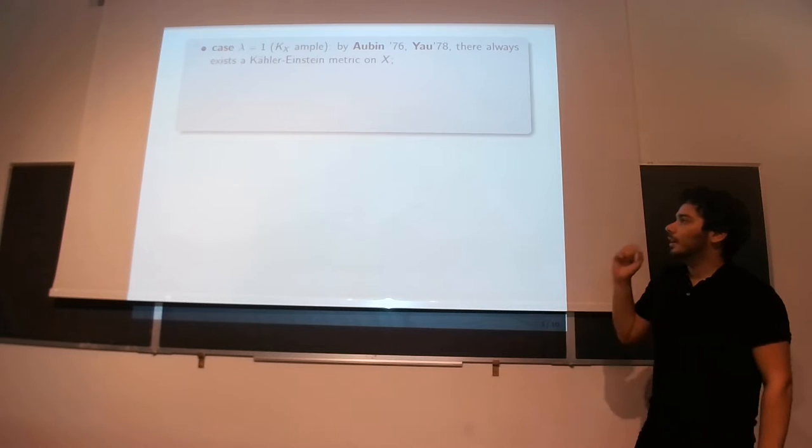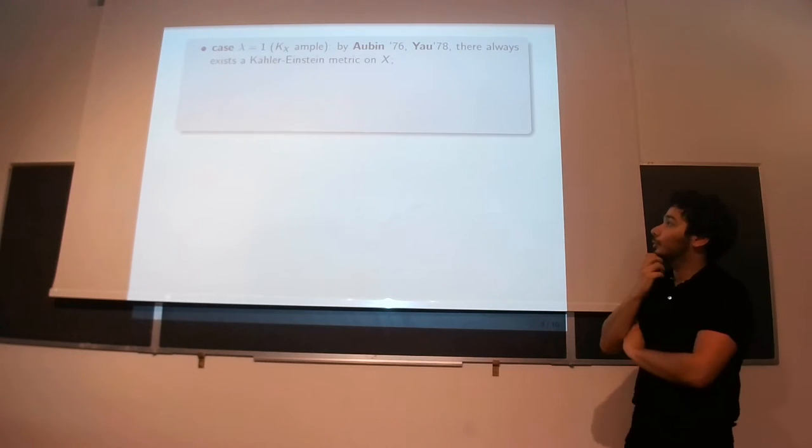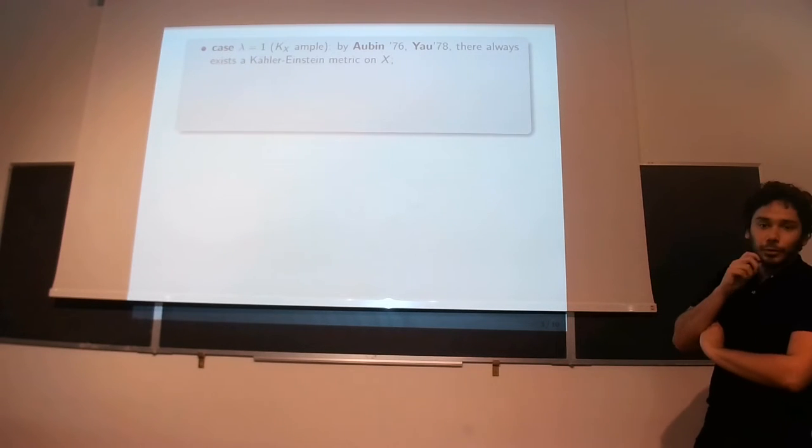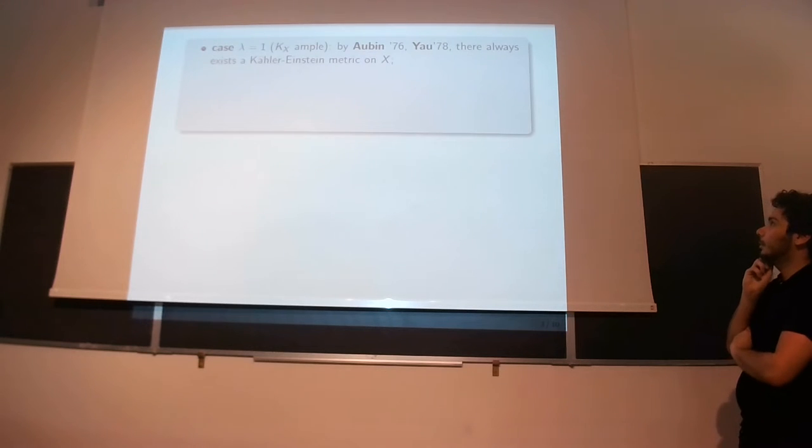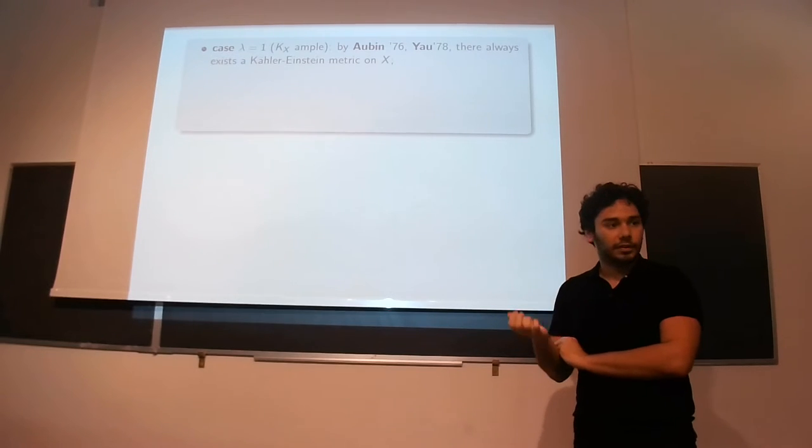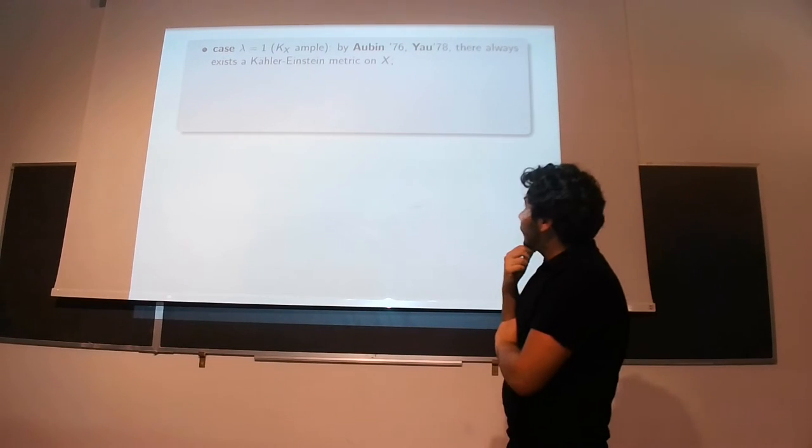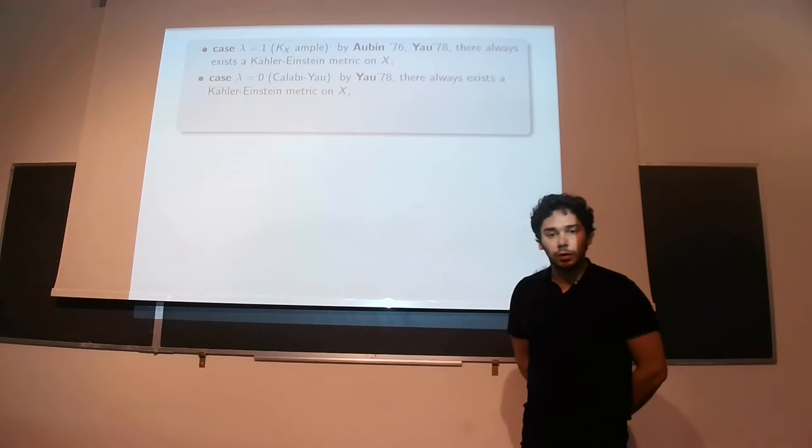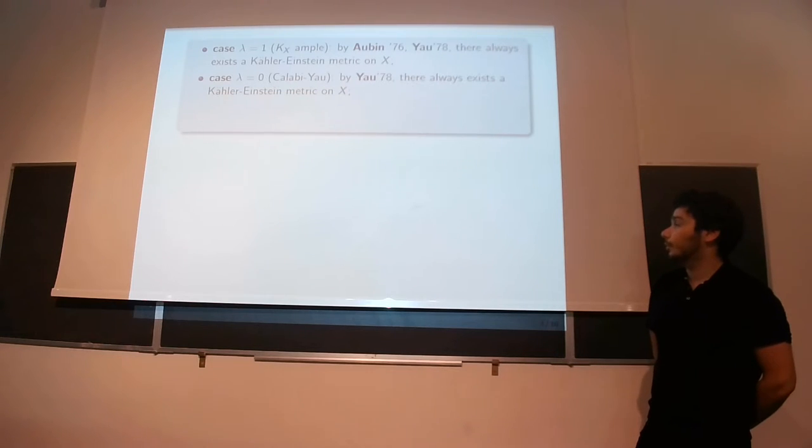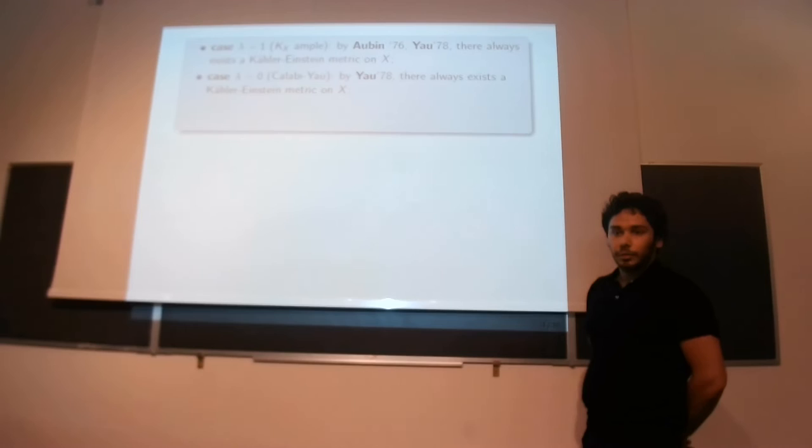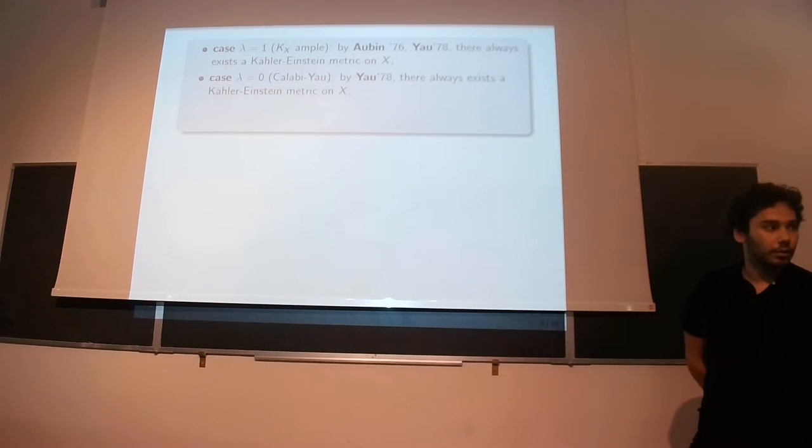So, historically, the case lambda equals minus one, the hyperbolized case, where KX is ample, that was solved a long time ago by Yau in '76 and others in '78. And so in this case, there are no obstructions. So there always exists a Kähler-Einstein metric. In the case lambda equals zero, so the Calabi case, this is why Yau got his Fields medal. And he also showed that there are no obstructions to the existence of Kähler-Einstein metrics. So in the Calabi case, such metrics always exist as well.